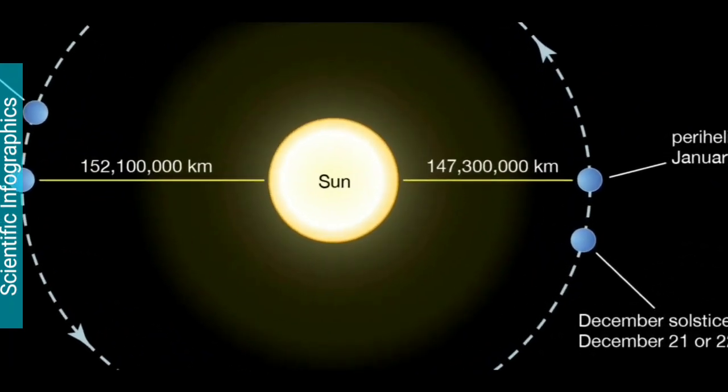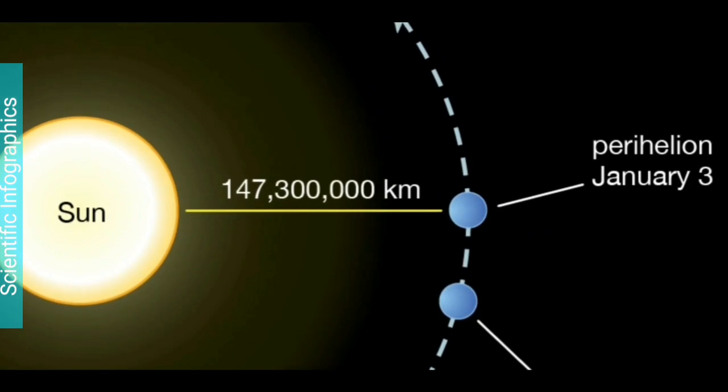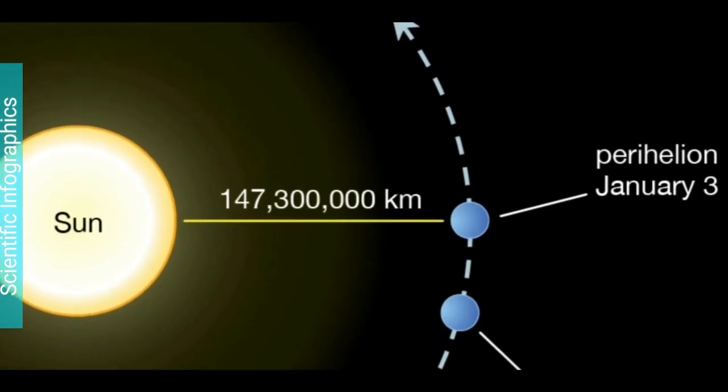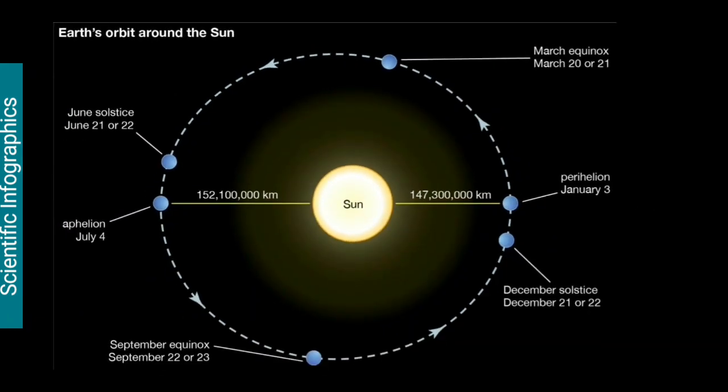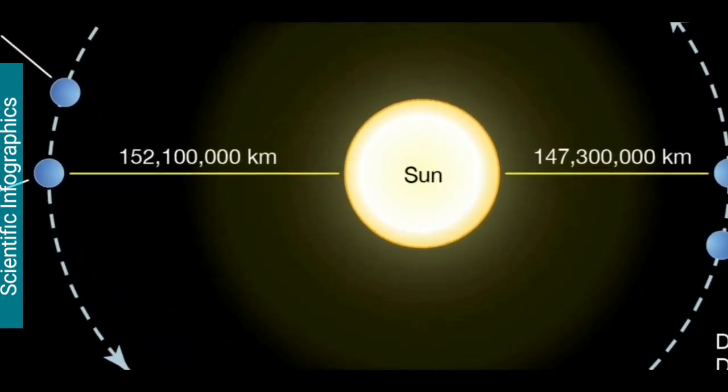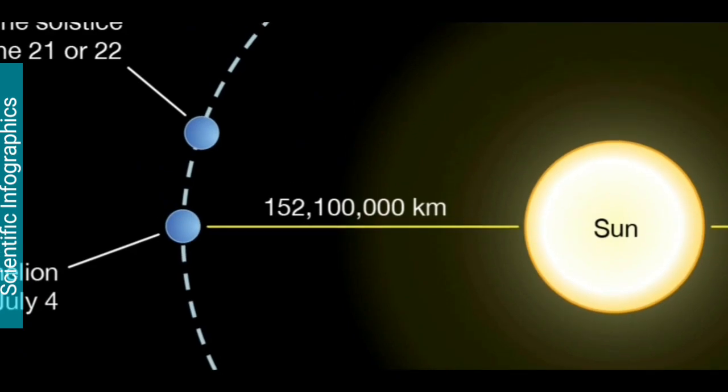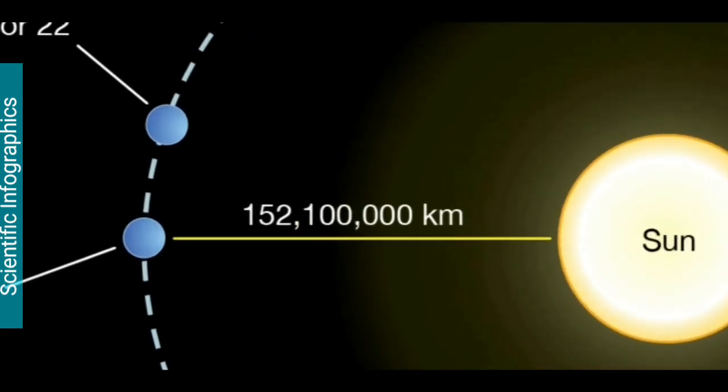At perihelion, the distance between Earth and Sun is 147,300,000 km. At aphelion, the distance between Earth and Sun is 152,100,000 km.